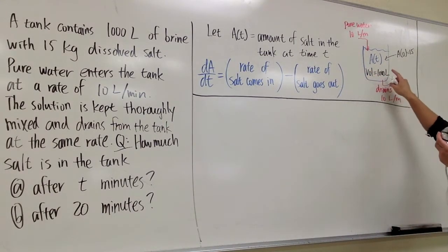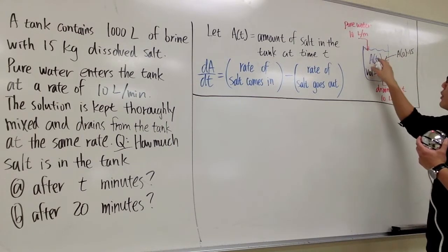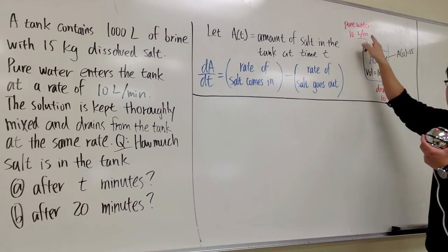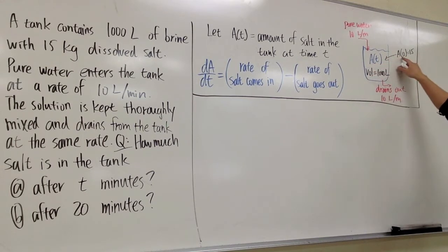And let's look at the picture real quick. As you can see, this is my picture of the tank. The water goes into the tank at a rate of 10 liters per minute. And we have A of T kilograms of salt in the tank. And initially, we have 15 kilograms. So I wrote down A of 0, 0 to 15.